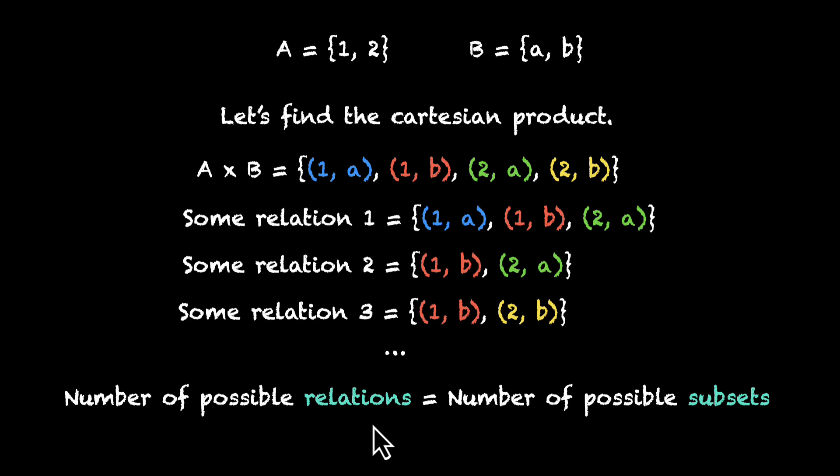Well, to find the number of possible relations, we need to find the number of possible subsets. We've figured out the Cartesian product. Now our job is to find all possible subsets. Let's do that in an interesting way. Let's list the elements down: we have 1A, 2A, 2B, and 1B.